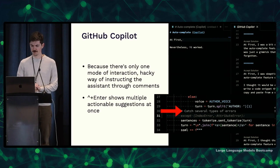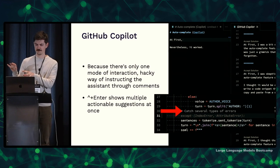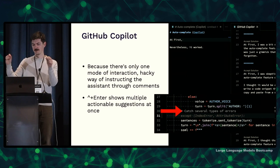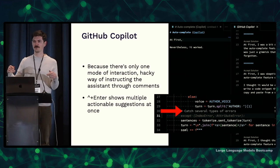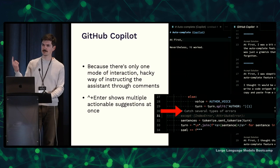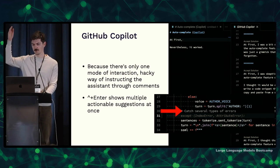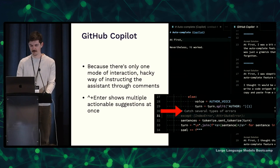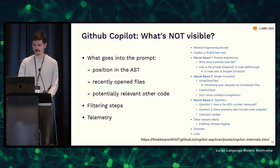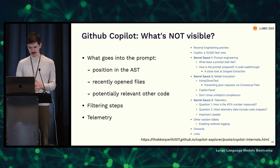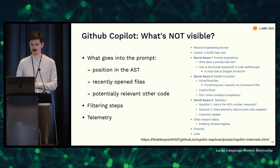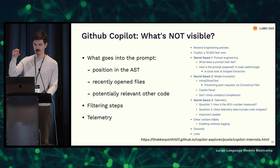Because there's only one mode of interaction, there's a hacky way of instructing it — like writing a comment saying 'this is a function that does X' and hoping Copilot writes that. Because it only shows one suggestion at a time, you can cycle through or press control-enter to see multiple suggestions in a new window, but both feel a little hacky. There's also a lot of stuff not visible in this interface — beyond the text you typed, it also considers your position in the abstract syntax tree, recently opened files, and other potentially relevant functions.